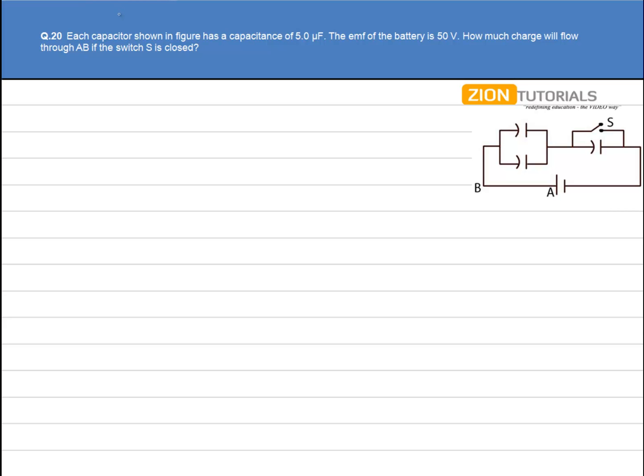So let's calculate the charge on each of the capacitor. We have 5 microfarad, 5 microfarad in parallel. So C' will be equal to, let's say this is the capacitance C1, this capacitance C2, this capacitance C3 will be equal to C1 plus C2 that comes out to be 10 microfarad.